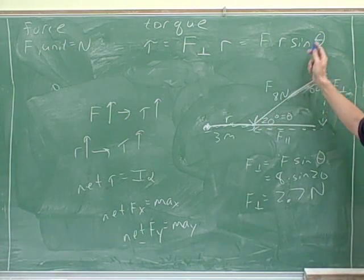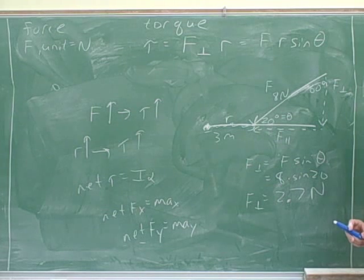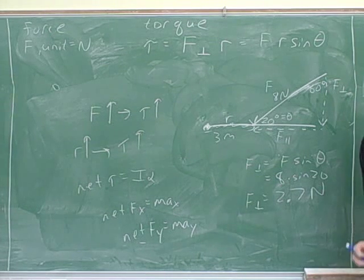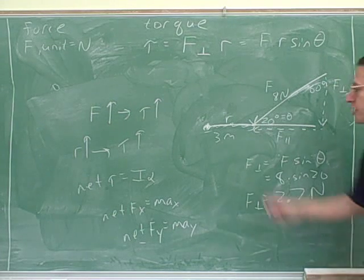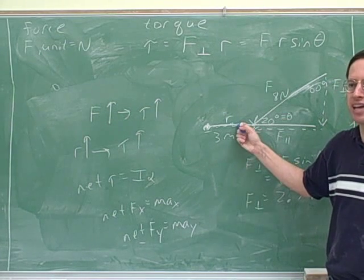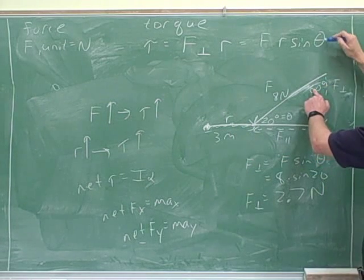But if you are going to use this, then what is theta? Theta is the angle between f and r. So that's something you need to have in your notes. Theta is the angle between f and r. That's one reason why we had to draw r. Because otherwise we can't find the angle between f and r.